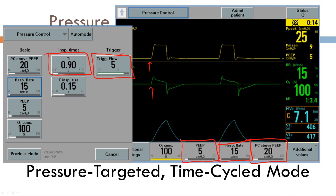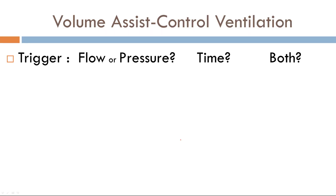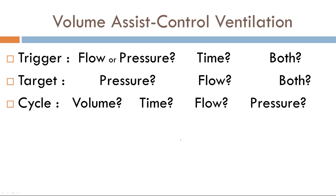Let's go to volume assist-control ventilation — same concept. What is your trigger variable? What is your target variable? What is your cycle variable? Pause the video now and let's figure it out.